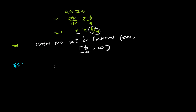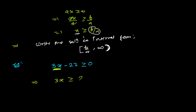Let's say we have the inequation 3X − 27 ≥ 0. The first rule is to collect all variable-containing terms into one side. Here the variable-containing term is 3X. If there were terms on both sides, we'd move them to one side.